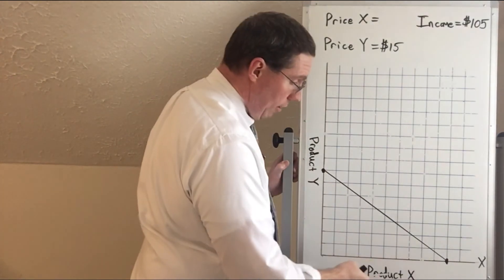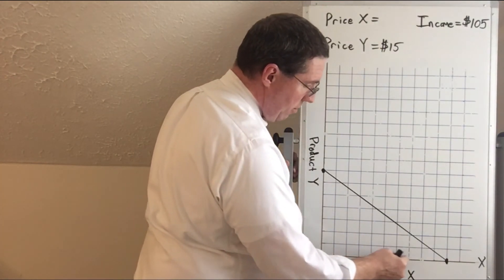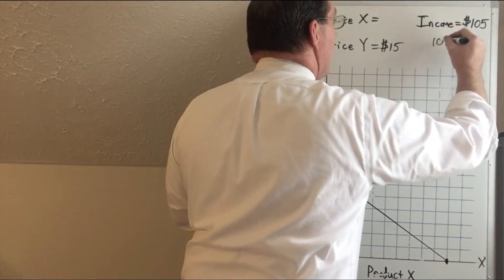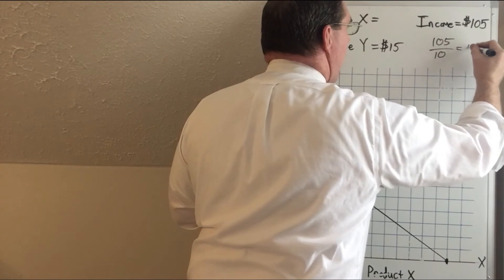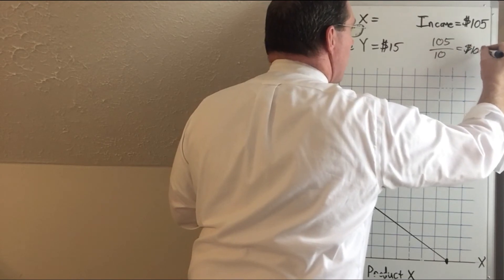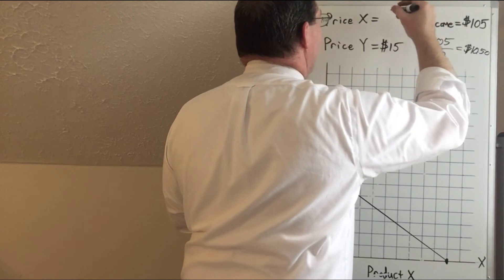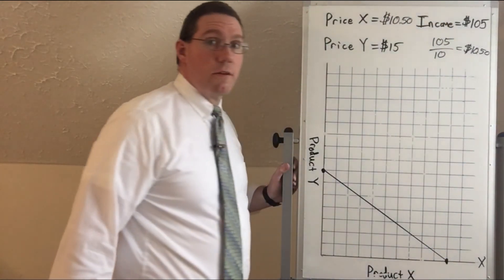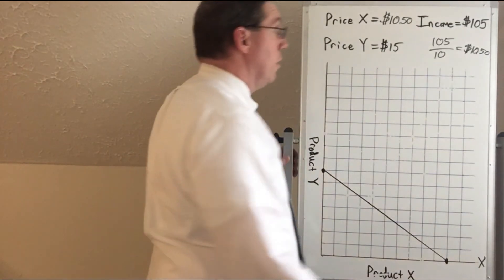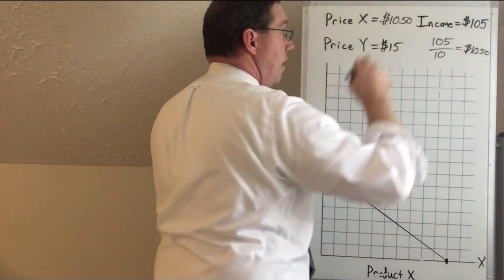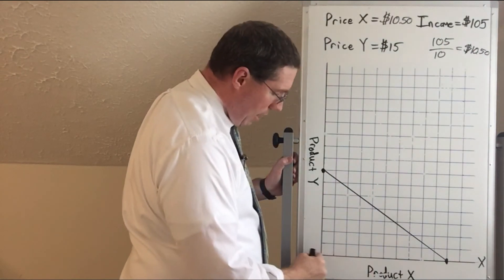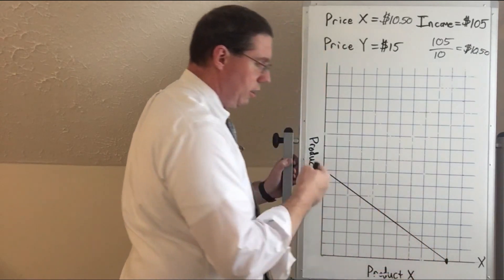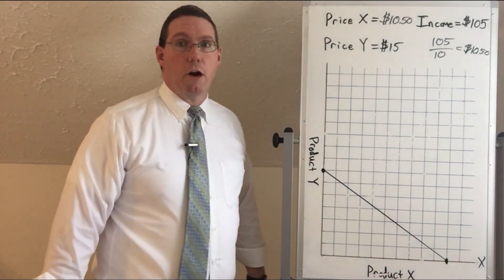We can check our answer: $105 divided by $15 equals 7, and we count up seven on the y-axis to confirm the dot. If we do the same for product X, counting along the x-axis gives us 10 units. So $105 divided by 10 equals $10.50, meaning the price of X is $10.50. We verify: $105 divided by $10.50 equals 10. Then we put a dot at 10 on the x-axis, connect with a straight line, and we have our budget line.